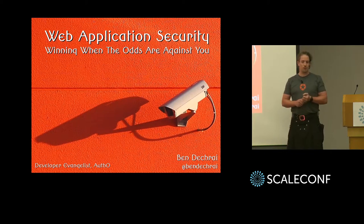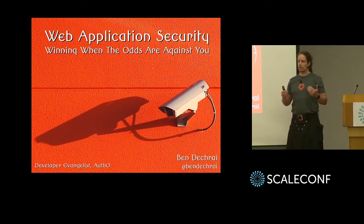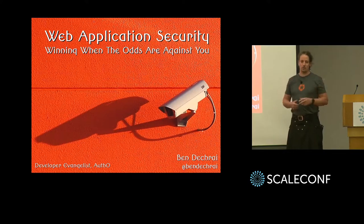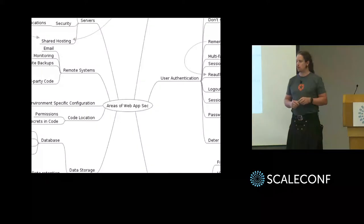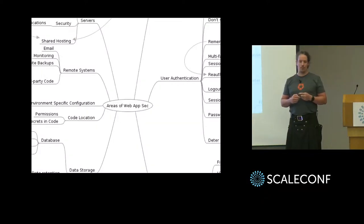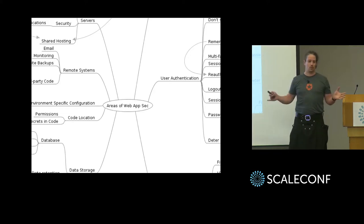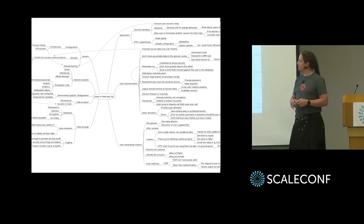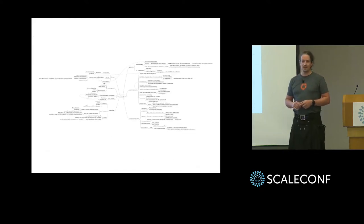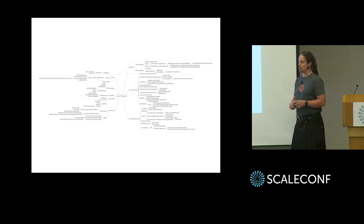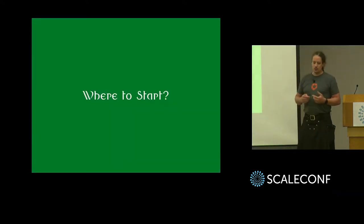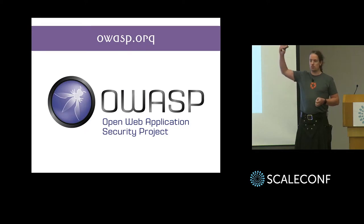When I was putting this talk together, I thought I need to hone down web application security, which is a massive arena. I thought, how can I consolidate this down into something accessible and not confusing? So I started with a mind map, looking at all the areas of web application security. I started building out all these branches and got to the point where I thought, I don't even know what I've written anymore. I need to take a different angle. So where to start? Has anybody here not heard of OWASP?